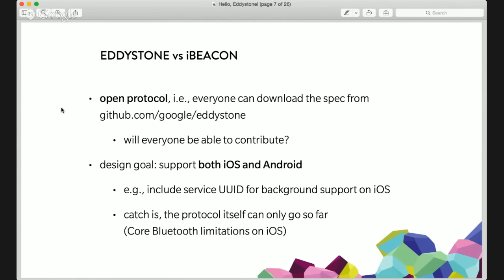We've seen a bunch of pull requests and discussions around Eddystone on Google's GitHub, and some have been accepted so far — mostly minor contributions to documentation or fixing examples and tools. It remains an open question how open Google will be to more substantial developments of the Eddystone protocol. Keep in mind that while Eddystone is an open protocol, there are definitely things closed around its use at higher levels. One of the services Google has promised is the Nearby API, which as we'll discuss is not open.